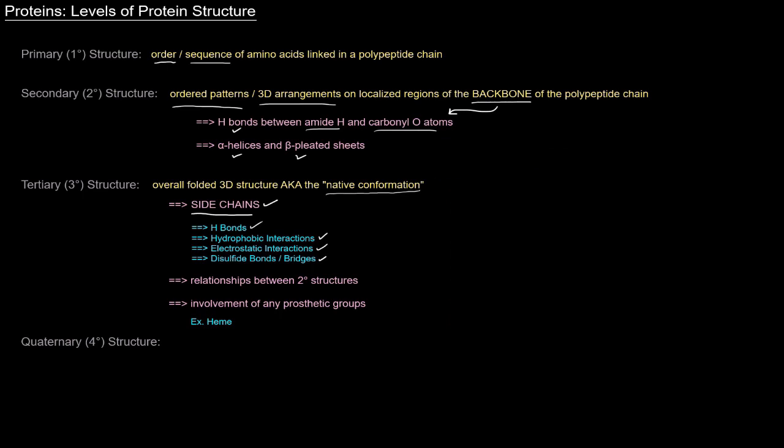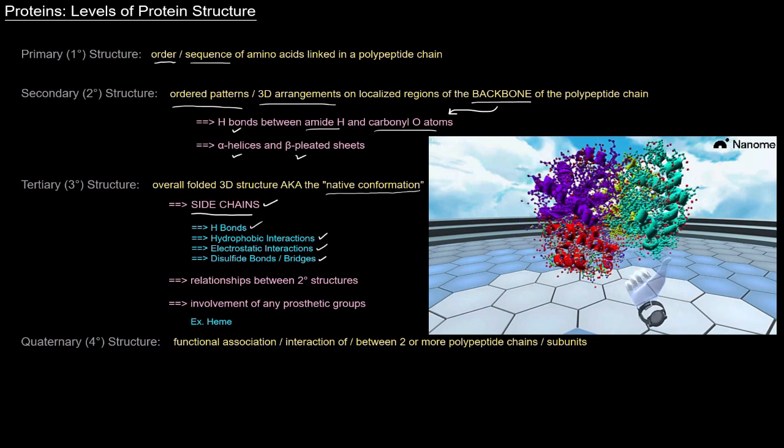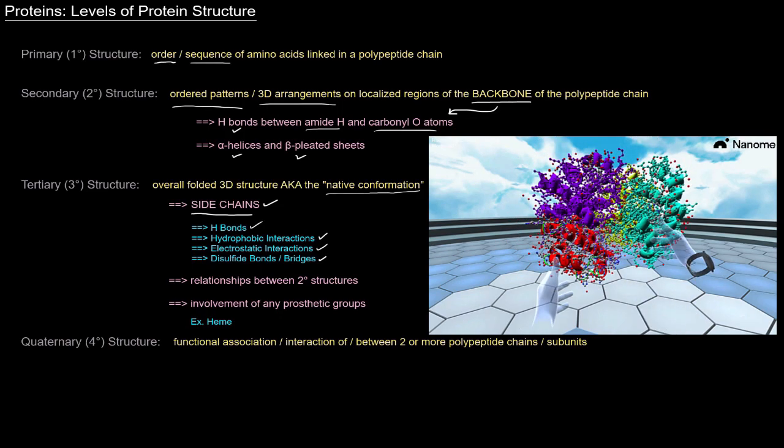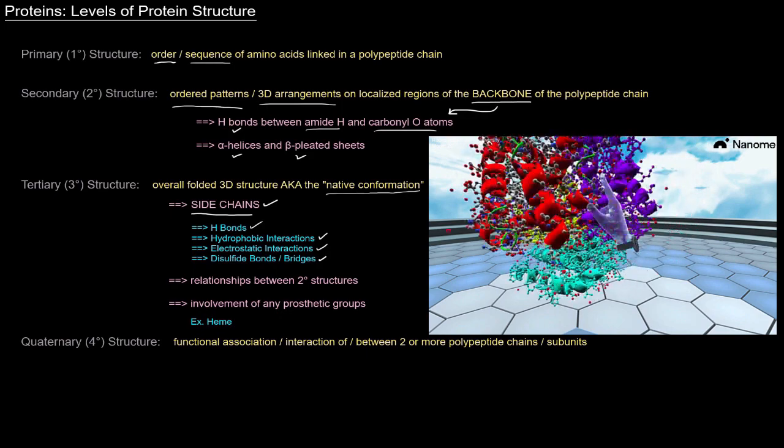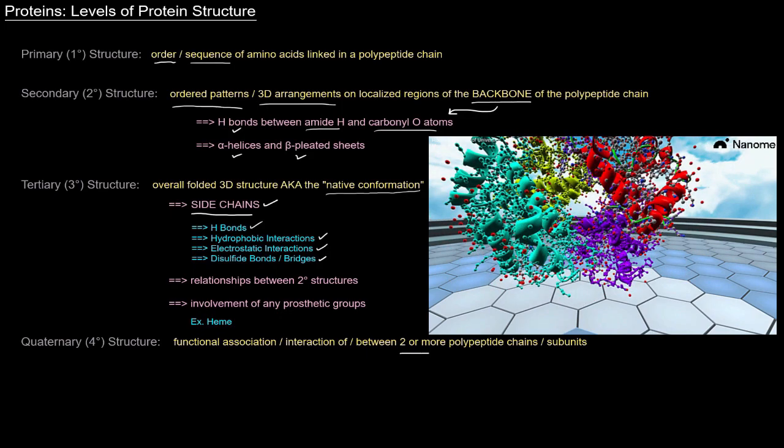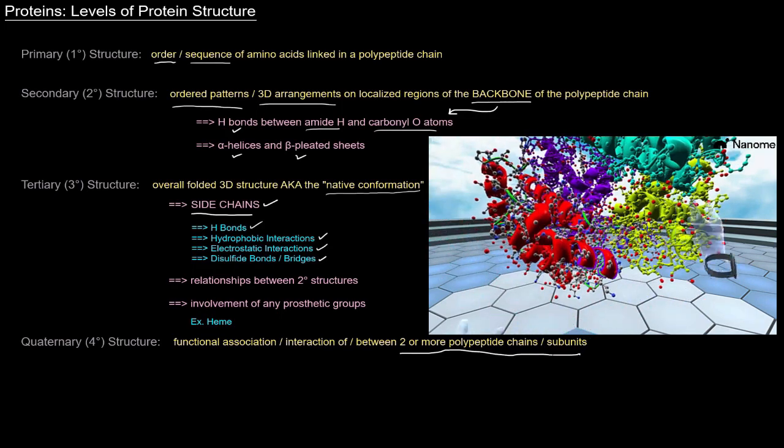And last but not least is the quaternary structure. And quaternary structure refers to the functional association or interaction of or between two or more polypeptide chains or subunits. Long story short, if you've got a protein with two or more polypeptide chains or subunits, that protein has quaternary structure.